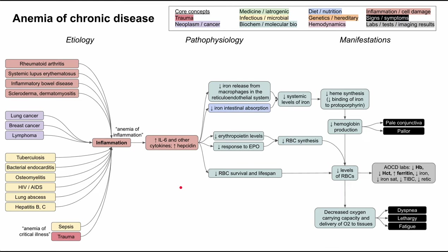This is a mechanism of disease map for anemia of chronic disease. I'll be talking about the etiologies, which are essentially the chronic diseases that cause this form of anemia, the pathophysiology of this disease, and the manifestations of anemia of chronic disease. In all of these mechanism of disease maps, the core concepts are color-coded according to the legend. I'll be clearing each of these boxes and talking through each item one by one.